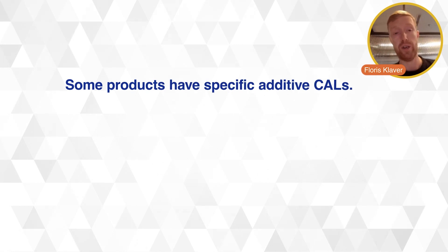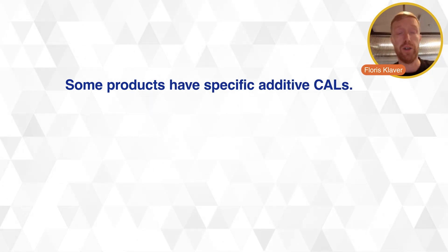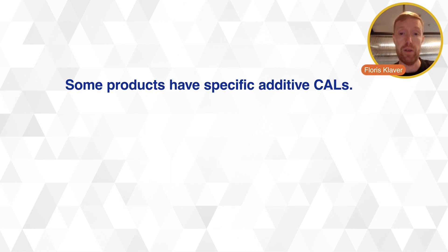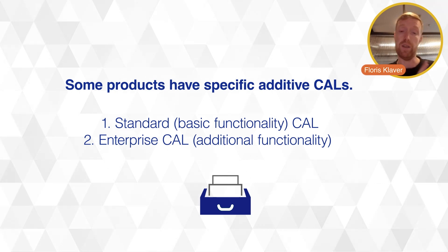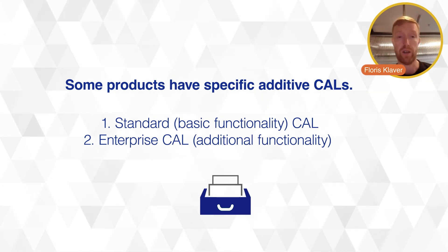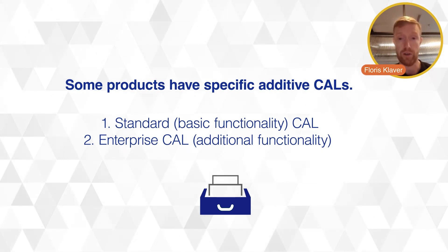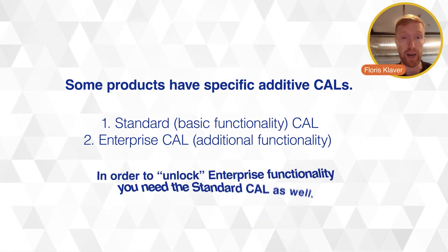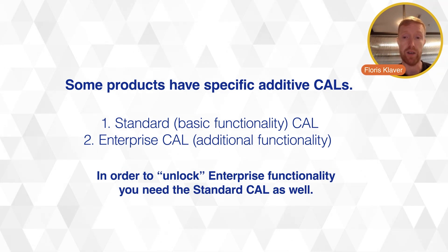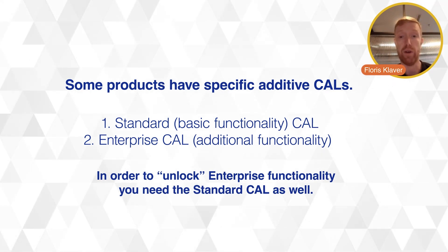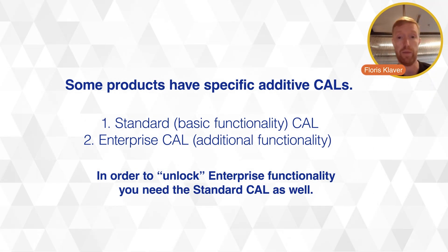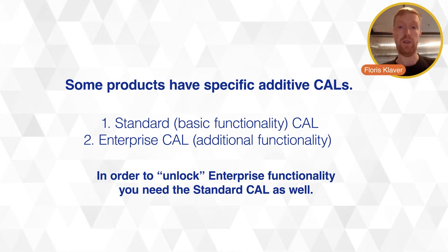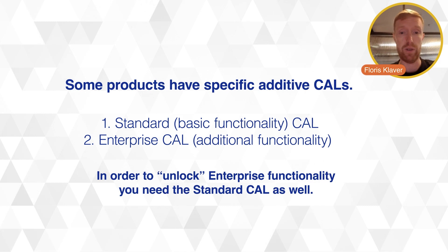Client access licenses are usually functionality-based. If you buy an Exchange client access license, you have two flavors: a standard and an enterprise client access license. The standard one holds basic functionality, and the enterprise client access license offers an additional set of features. You cannot just buy an enterprise client access license because these are always additive — if you have a requirement for enterprise functionality, you first need to buy the standard CAL and then buy an add-on enterprise license to unlock all that functionality.